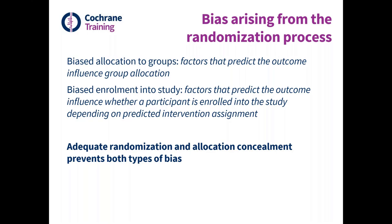Another problem is biased enrolment into a study if group assignment is predictable. Knowledge of the next assignment can enable selective enrolment of participants on the basis of prognostic factors — participants who would have been assigned to a group that is deemed inappropriate may be rejected. In epidemiological terms, this is a type of selection bias. So biased allocation to groups can introduce confounding, while biased enrolment into the study can introduce selection bias.